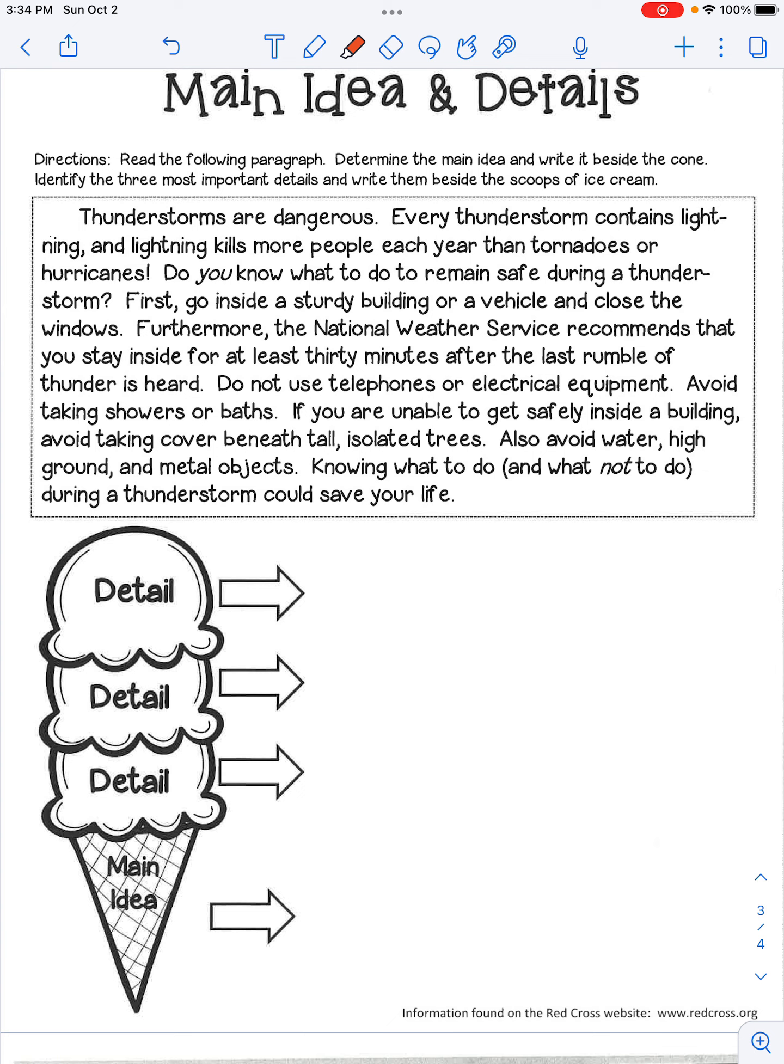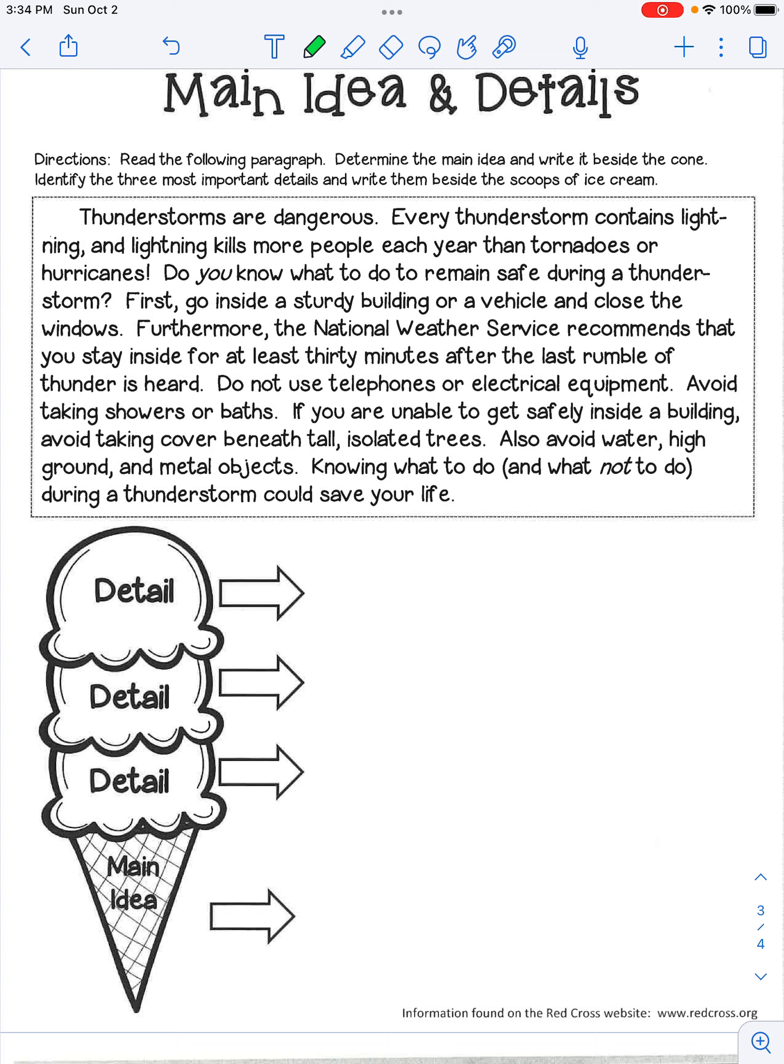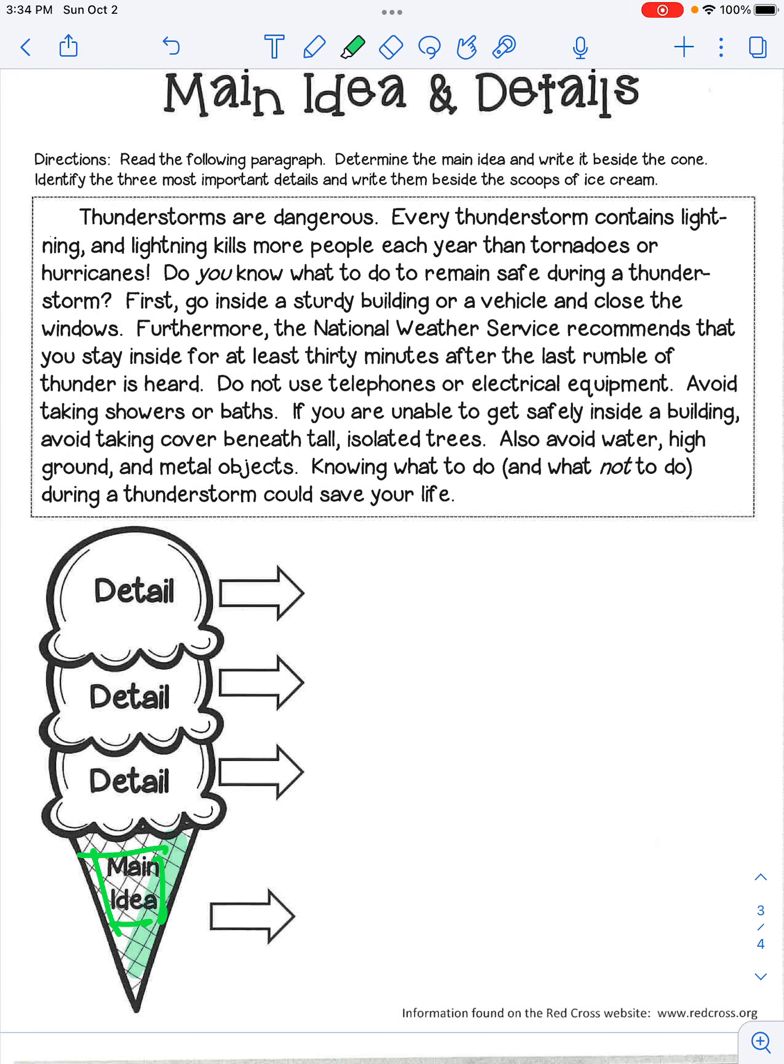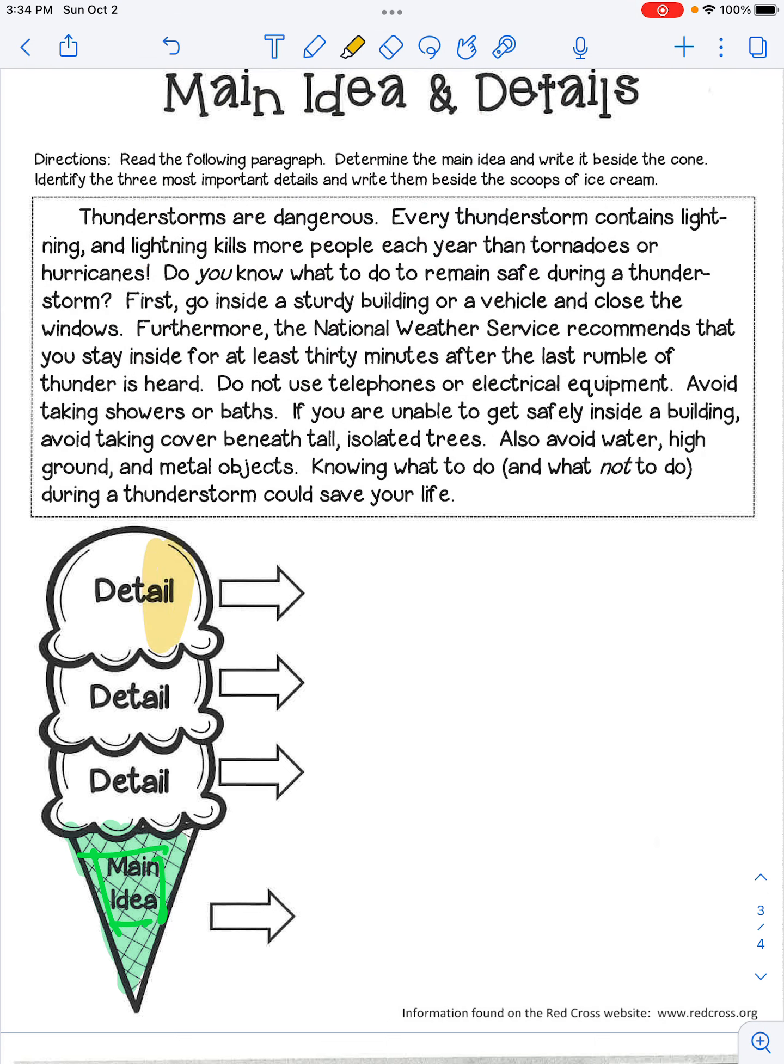All right, here we go with our main idea and details page. Please remember you have your main idea. And then you have your details. So main idea is usually a green. And then we have our details, which is one detail is yellow. The second detail is yellow. And the last detail is yellow.